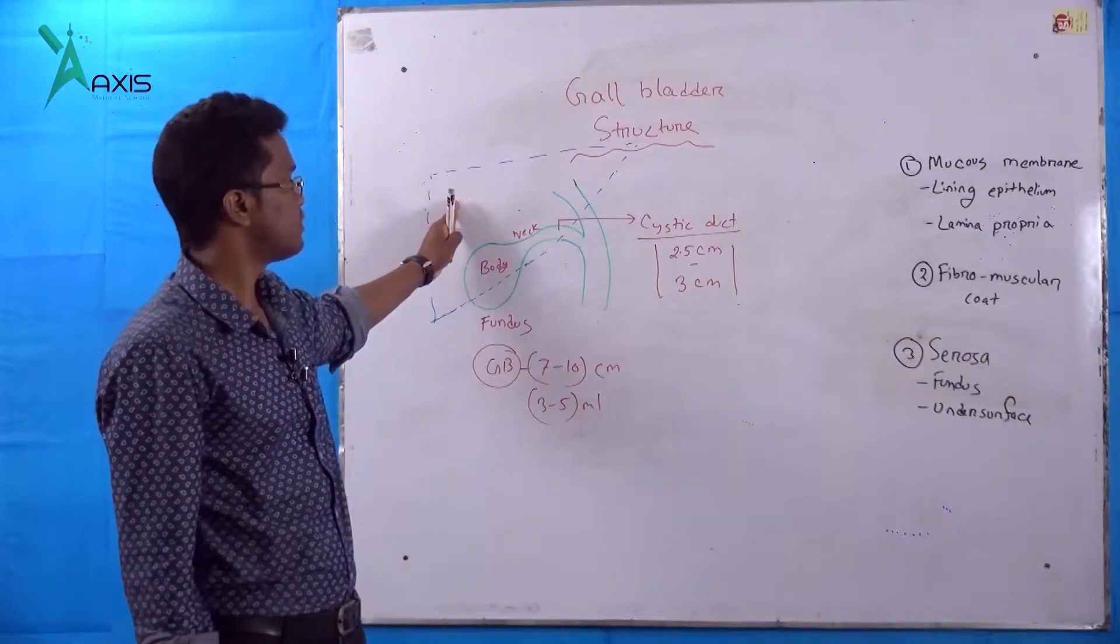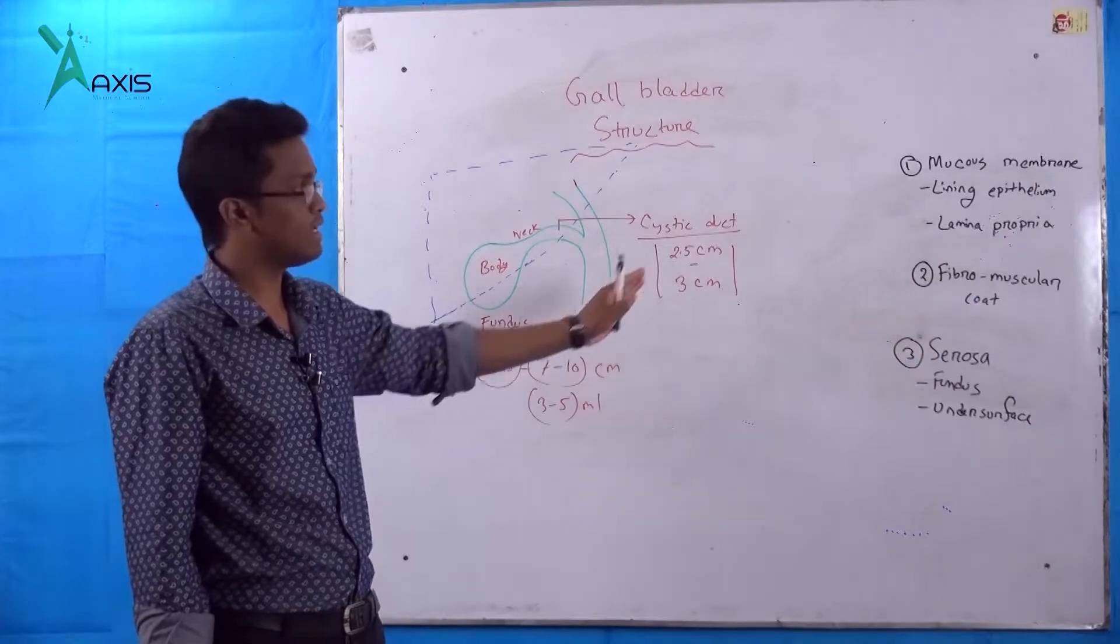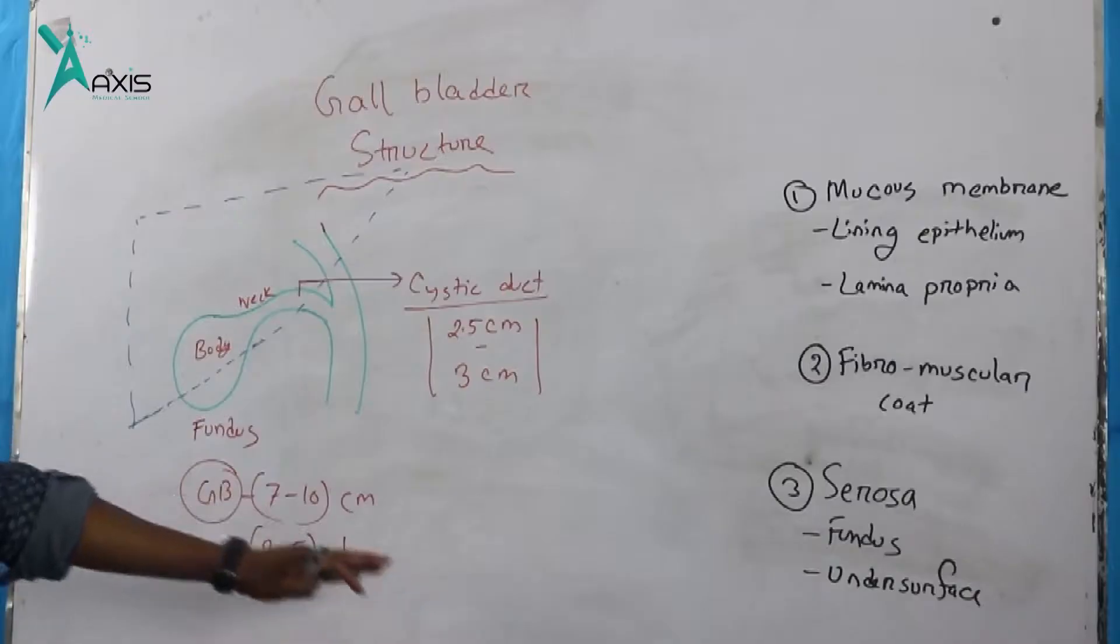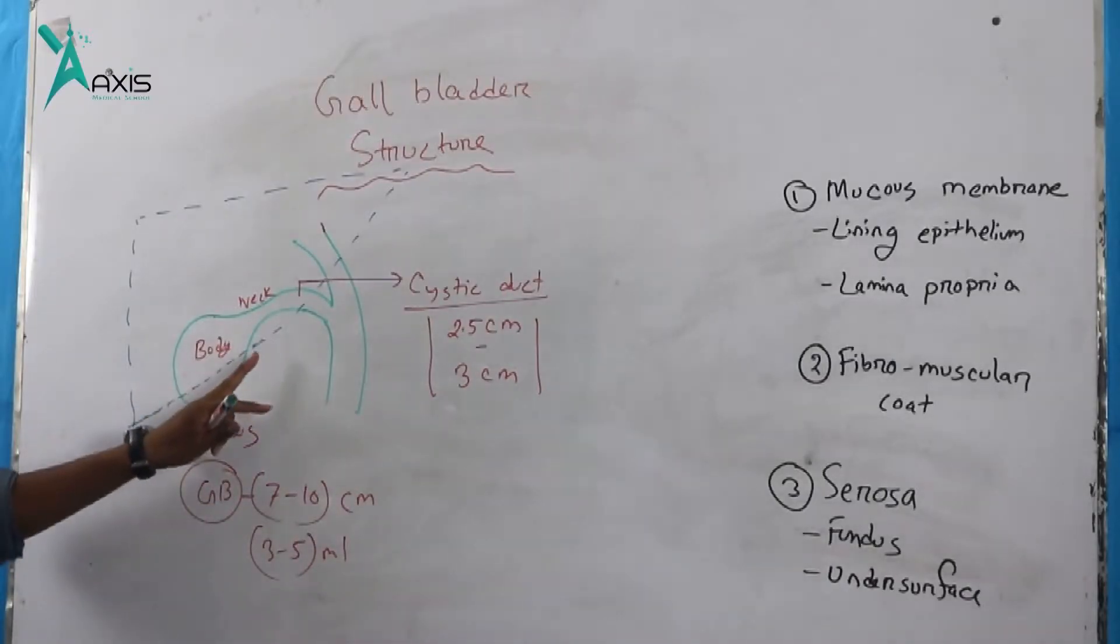Now we'll discuss the anatomy of gallbladder and the structure of gallbladder. This is the basic anatomy of gallbladder. The gallbladder has three parts mainly.